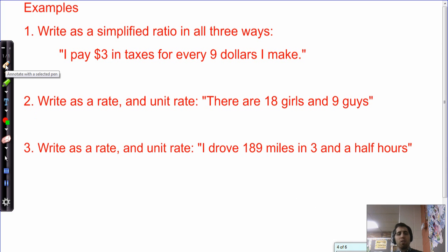Examples. Here we go. Work with me. Write as a simplified ratio in all three ways. I pay $3 in taxes for every $9 I make. Ain't Uncle Sam the best. You'll hear people complain about taxes more and more. $3 in taxes for every $9 I make. I'm going to pause. $3 in taxes for every $9 I make.